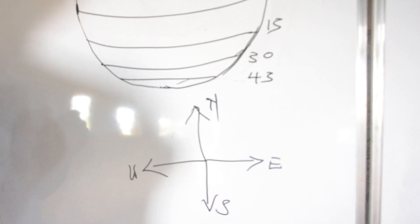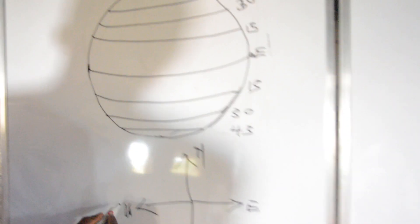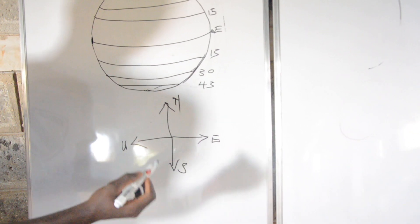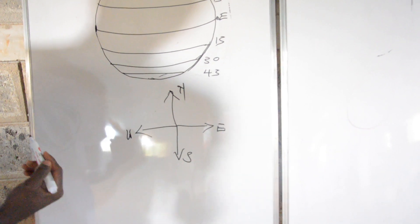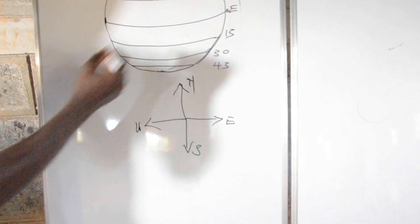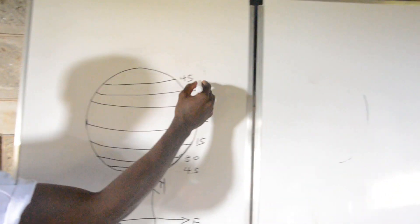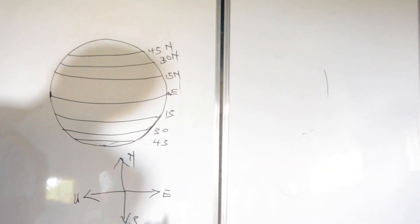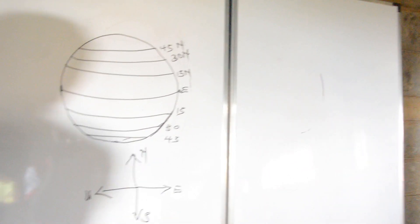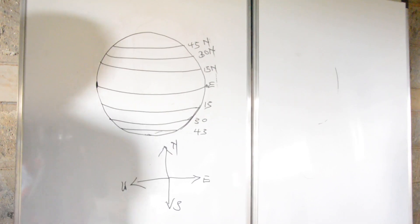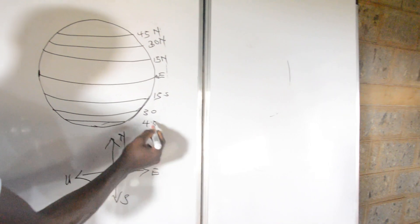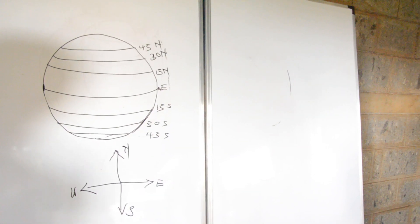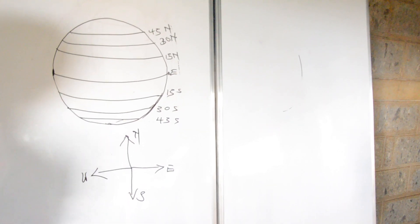For these latitudes, I want you to imagine that the latitudes run along the east-west line of the compass. Any point above the equator line we say is north of the equator. So this place is 15 degrees north, this place is 30 degrees north, this place is 45 degrees north. Those that are below this line are on the southern part, so this is 15 degrees south, this is 30 degrees south, this is 45 degrees south.